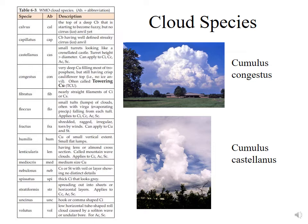Down below, we have an example of cumulus castellanus. Castellanus refers to small turrets that look like part of a castle, where the turret height is much bigger than the diameter. There are lots of websites out there that have example pictures of each one of these species types.